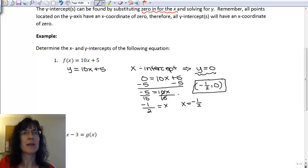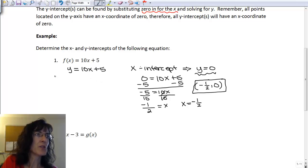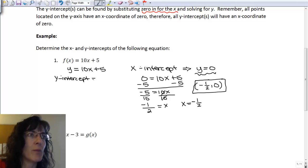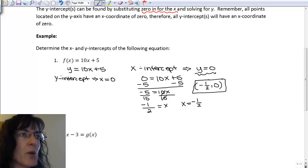My y-intercept is going to be a little quicker just because of the way that this equation is written. So to find the y-intercept, remember I should let my x equal 0. So I'll plug in 0 for my x, so I'll have y equals 10 times 0 plus 5. So my y equals 0 plus 5, which is 5.